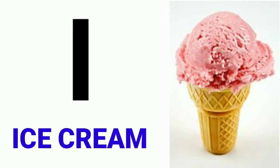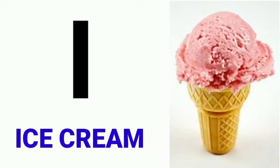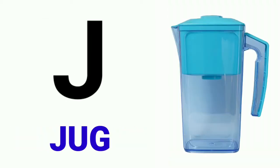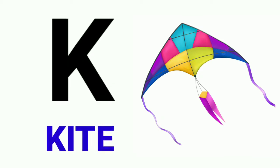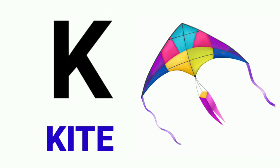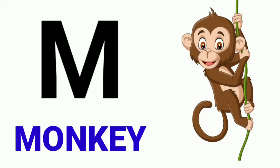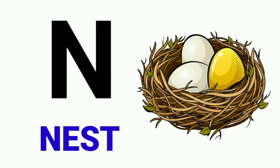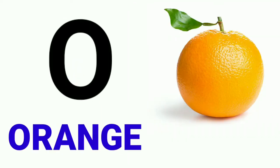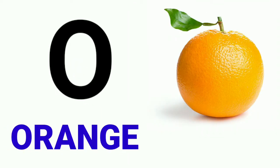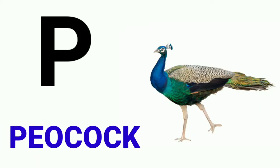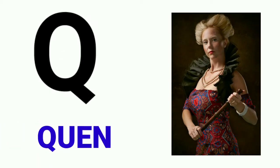I for ice cream, J for jug, K for kite, L for loin, M for monkey, N for nest, O for orange, P for peacock, Q for queen.